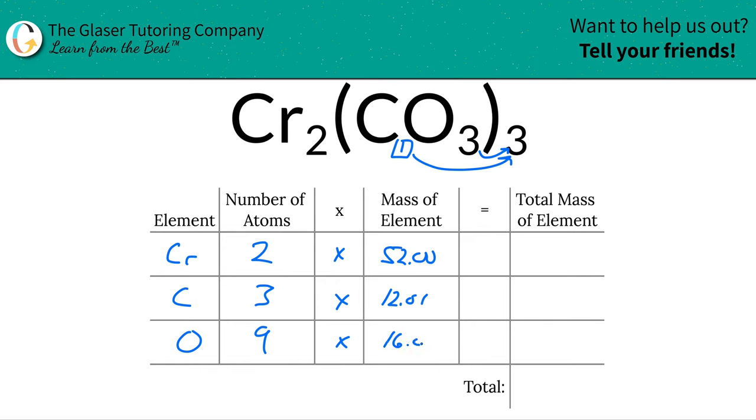To find the total mass of the element in the compound, you simply have to multiply this row across. So for chromium, this is simply going to be 104. For carbon, that's going to work out to be 36.03, and then for oxygen, it's just a simple 144.